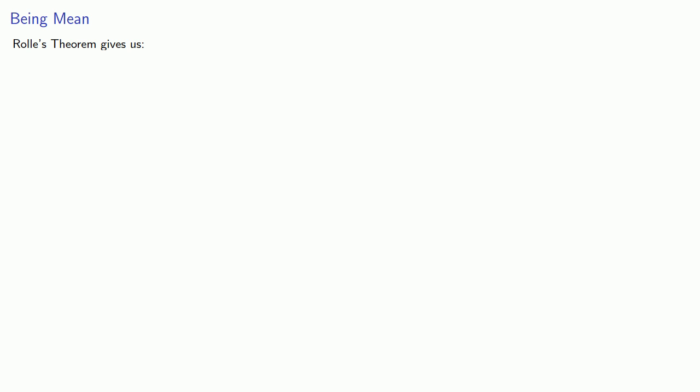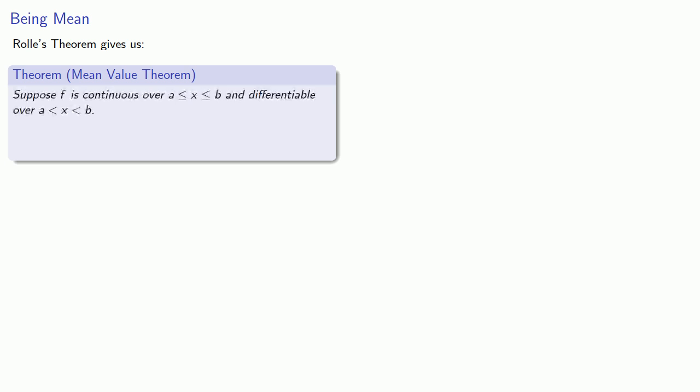Now, Rolle's theorem by itself isn't all that useful because the conditions we have to have in order for it to work are a little bit restrictive. We have to start and end at the same function value. But it does give us a much more important result known as the mean value theorem. And we'll start off in a very similar way. Suppose f is continuous over a closed interval and differentiable over an open interval. Then there's some c in that interval where the derivative is equal to this expression.